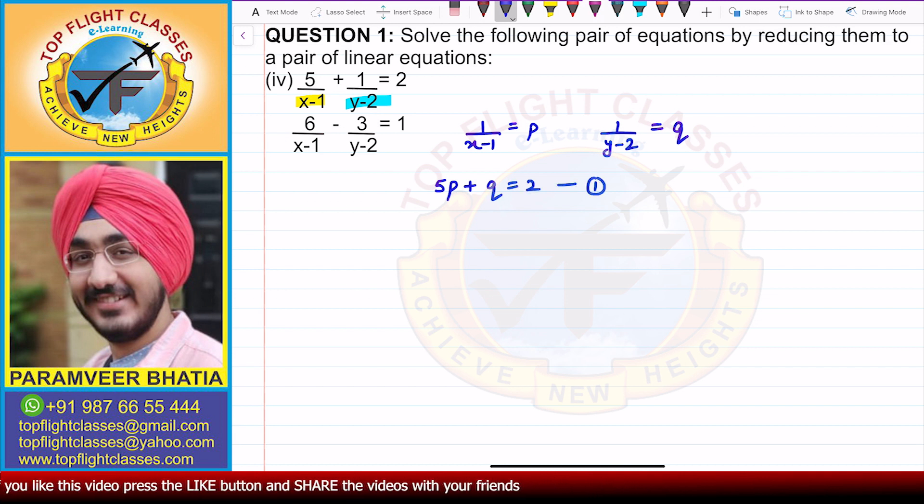From here I will get 5p + q = 2, this is the first equation, and the second equation will be 6p - 3q = 1. That is the second equation.